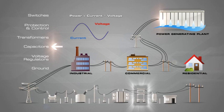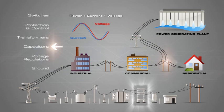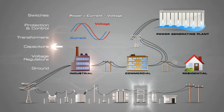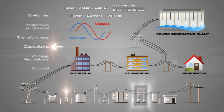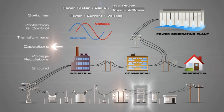Power is the product of current times voltage. As the power leaves a power generation plant, the voltage and current are in phase. As power is transmitted through the transmission and distribution grid to the loads, there are significant losses of power due to phase shift. Power factor is the cosine of the phase shift between voltage and current, or the dividend of real power divided by apparent power. Capacitor banks are located throughout the grid to correct for these phase shifts and improve the efficiency of the grid.